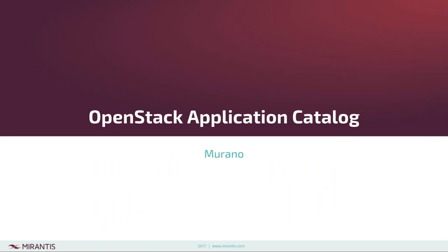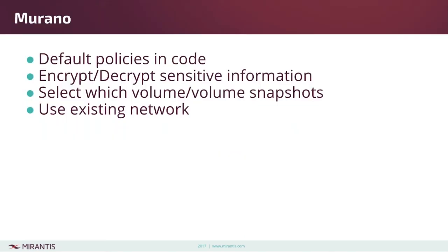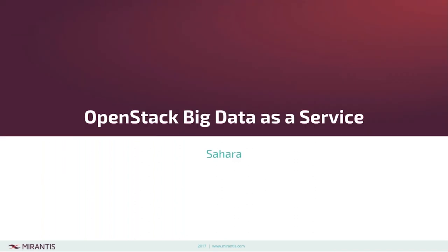Murano, the application catalog, has been putting default policies in code — similar to what we discussed with Keystone. Also, users can now encrypt and decrypt sensitive information by interfacing with the OpenStack Barbican project, and users have more control over which volumes and networks they are using.